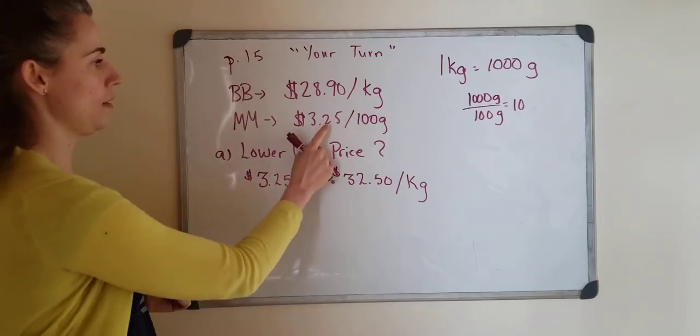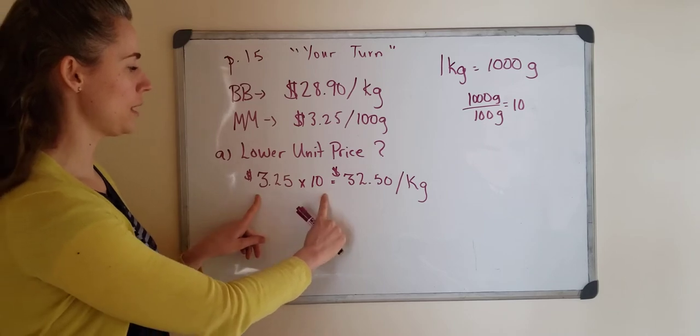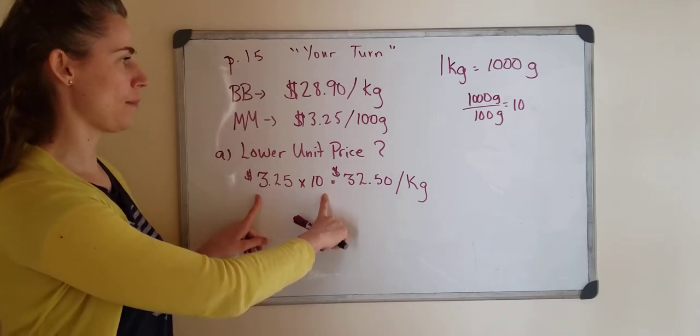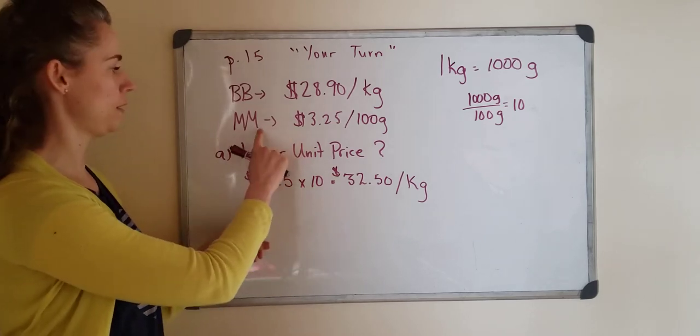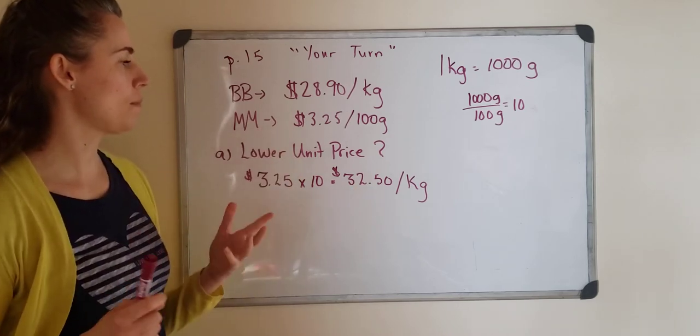So what I'm going to do then is multiply this by ten. I took my $3.25 times ten because that's going to get me up to one kilogram of the meat here. And I got $32.50 per kilogram. So let's compare that.